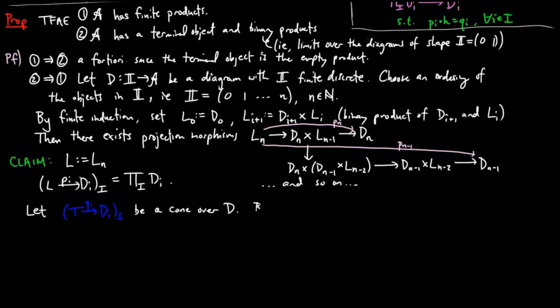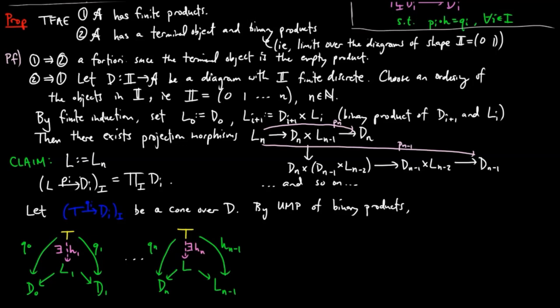By the universal mapping property of binary products and finite induction, for each i there exists a unique morphism H from T to L sub i. Therefore, by setting H to be H sub n, this gives us the unique factorization via L.